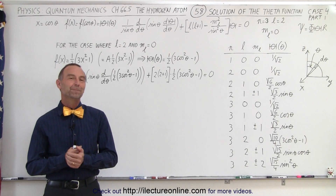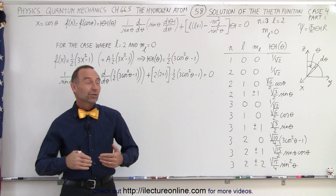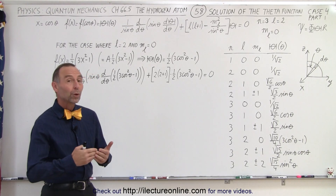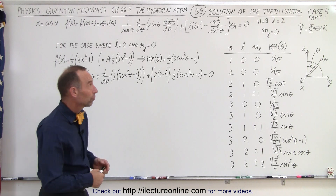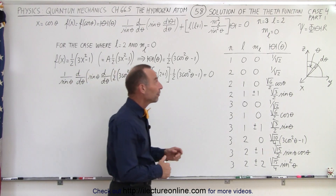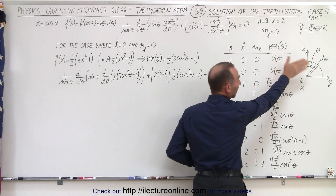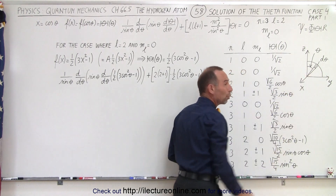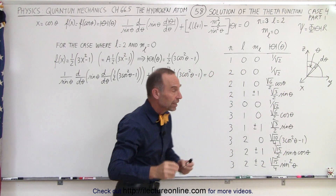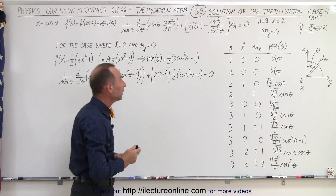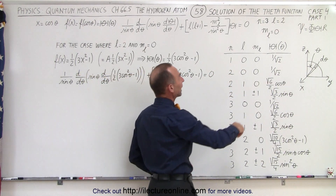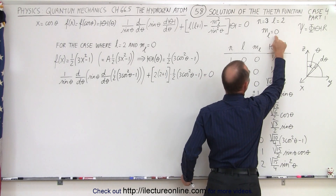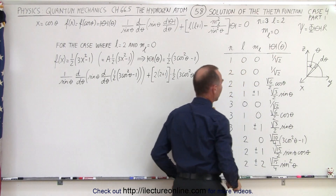Welcome to ElectronLine. Here we're going to continue taking another one of the solutions for the theta function — the theta function representing the angular direction on the motion of the electron in the hydrogen atom. In this case, we're going to assume that L is equal to 2 and M sub L is equal to 0.